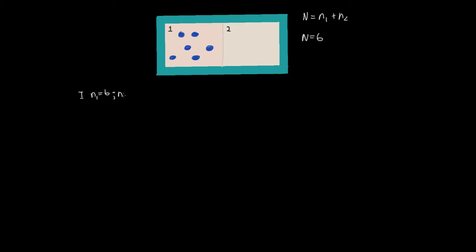First, we could imagine putting all six particles into the first box. This is configuration 1, in which n1 is equal to 6 and n2 is equal to 0. We want to know how many ways we can do this, and it turns out there's only one way — the only way is to put every single one of the six particles in box 1 and absolutely none in box 2.